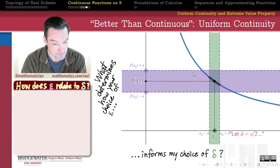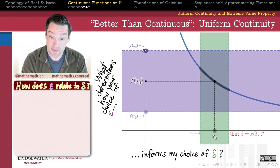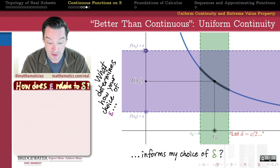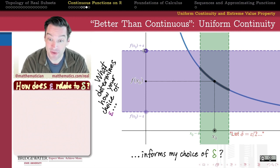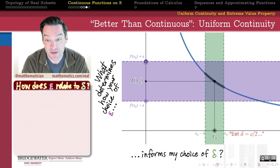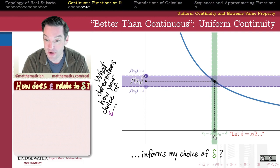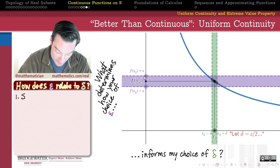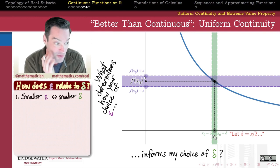Well, on the one hand, one thing that we notice is that if the universe gives me a bigger epsilon, it's giving me sort of more permission to wander further away from my input value of x0. So I can probably select the larger delta in response to a larger epsilon. And conversely, if the universe sets for me a very narrow target, then I probably have to choose a very narrow range of x values around which to wander around x0.